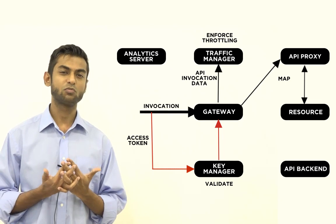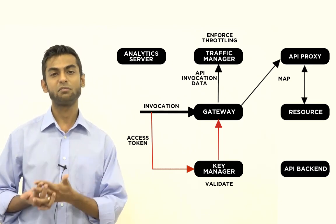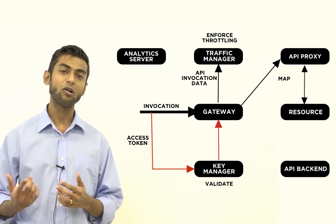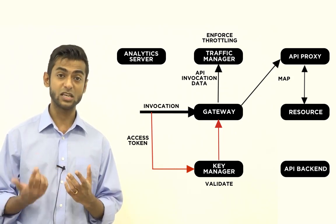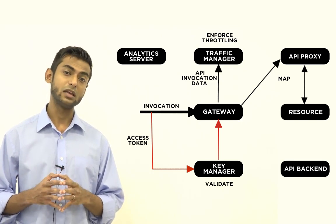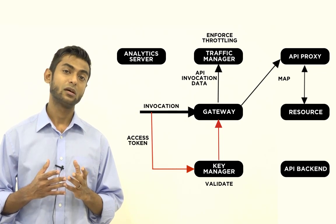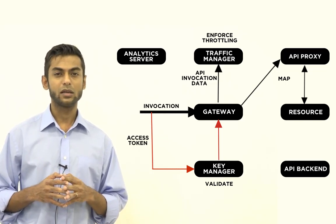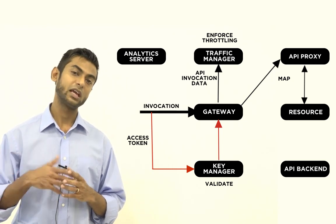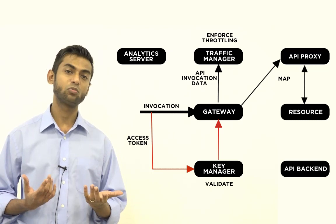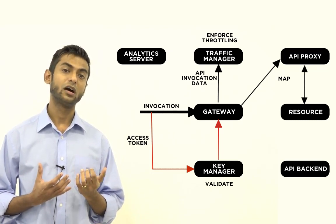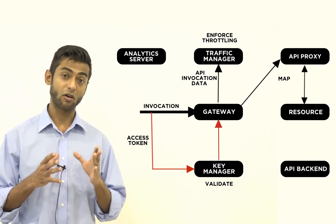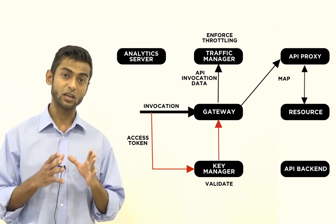So what the API Gateway does is it will publish this information to the traffic manager asynchronously and then the traffic manager will keep track of the number of calls that a given API receives and will decide if that API has exceeded the given throttling policy that has been configured for that particular API. And then it will inform the API Gateway if that event occurs. And then the API Gateway will stop processing API invocations for that given API until the time window when that throttling policy needs to be enforced expires.